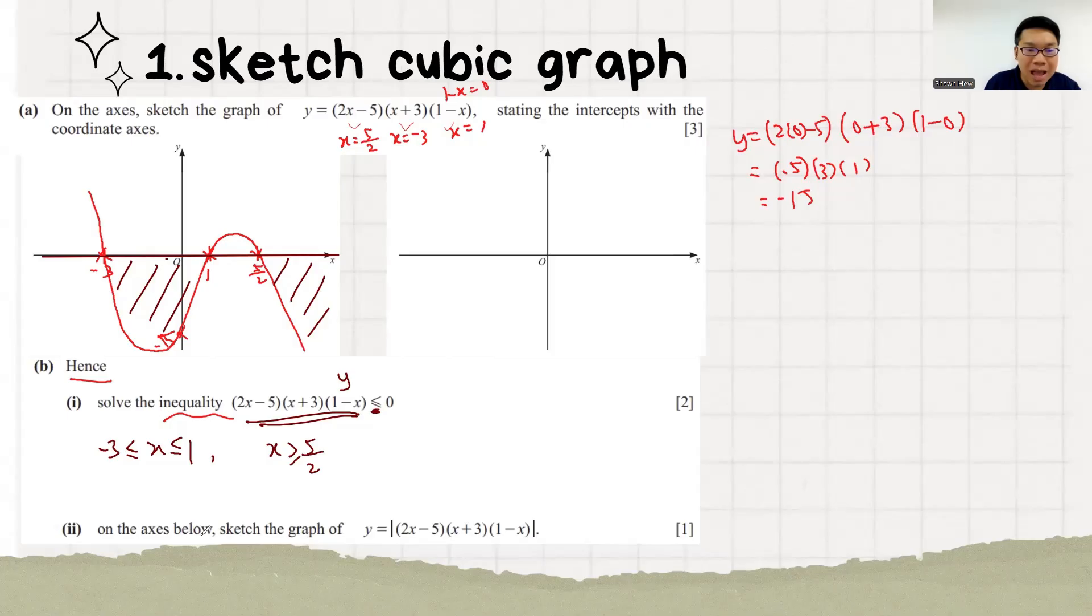Last, they ask you on the axis below, sketch the graph of modulus of this. So if modulus means that everything we just flip up. Everything below, we don't want we flip up. So initially, it's like this. Everything bottom, we remove.